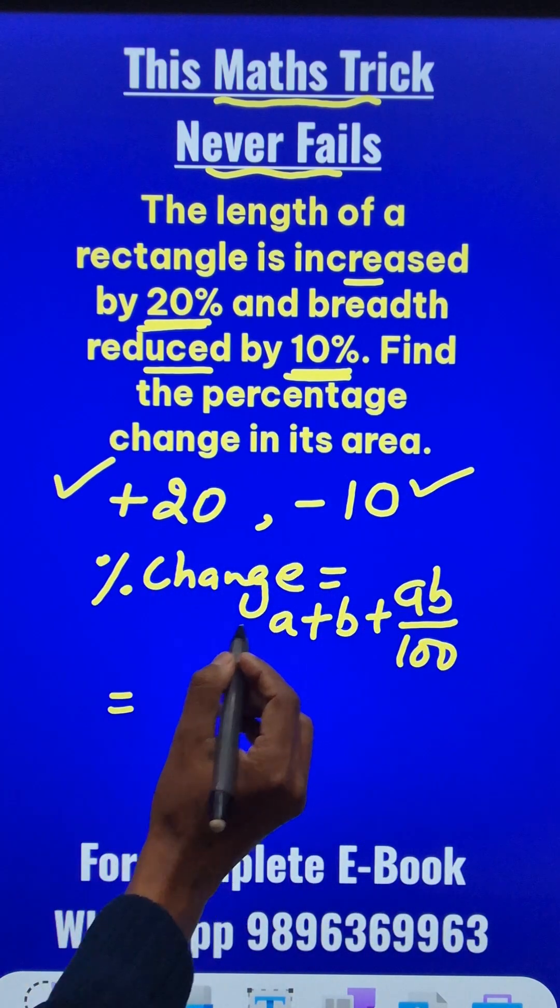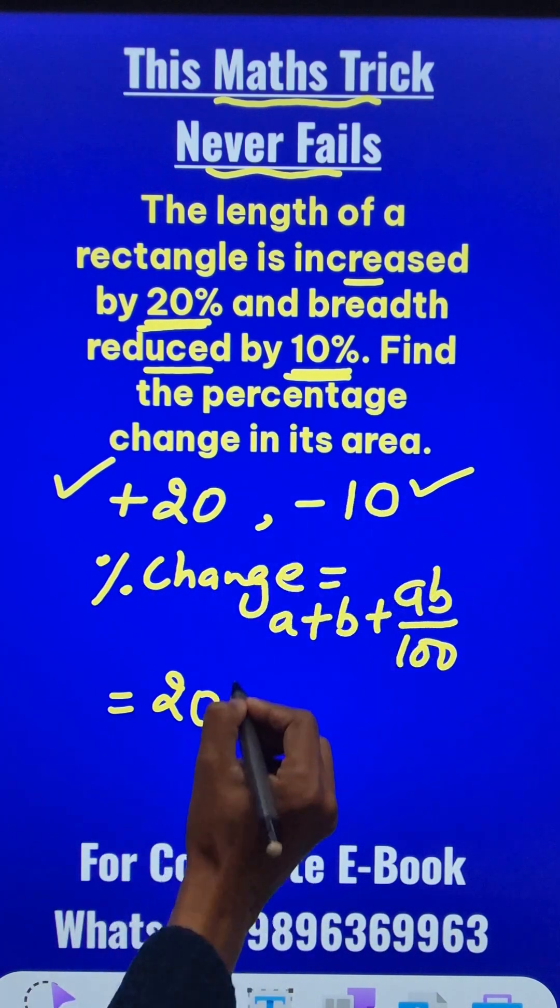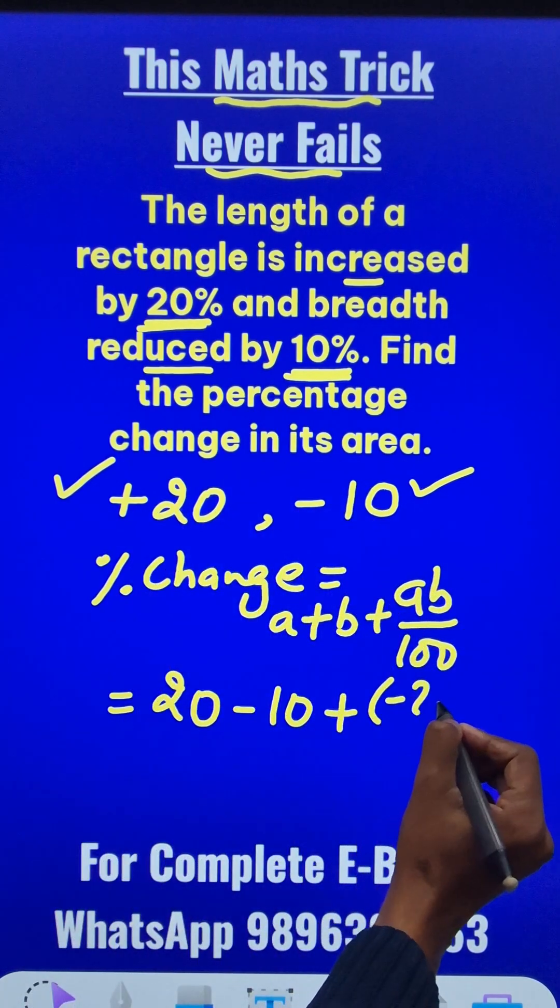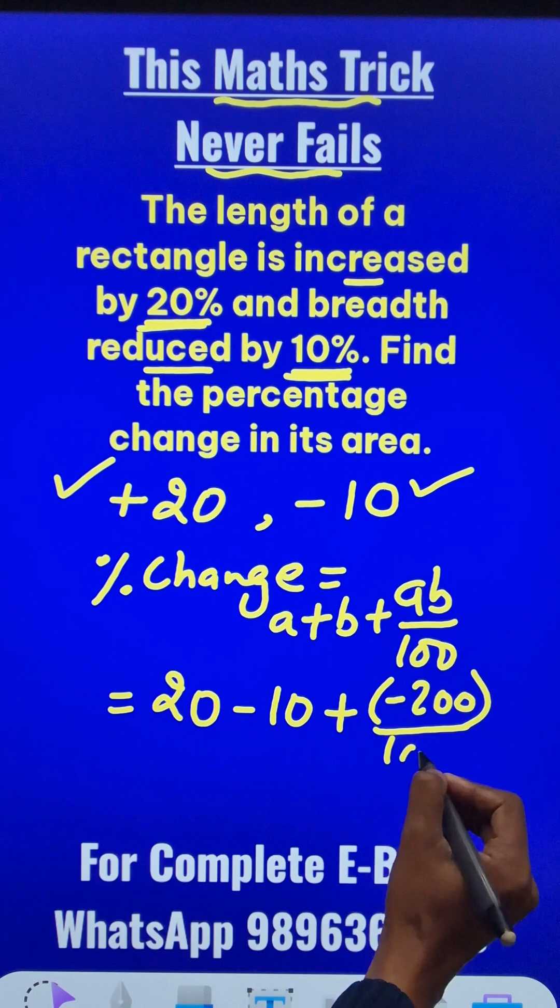So what will be the answer? a is 20, b is negative 10, so I will write negative 10, plus a times b. When you multiply these two, you get minus 200 and divide the result by 100.